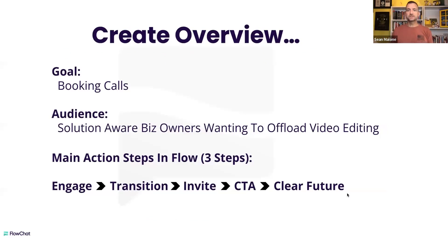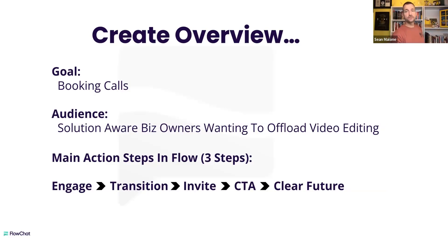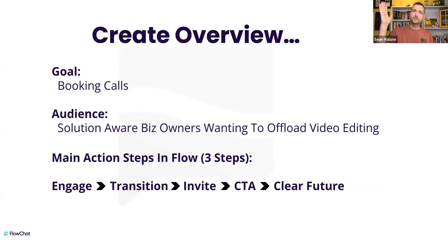The first thing we always do is create a very simple overview. What is our goal? We want to book calls. Who is our audience? Solution-aware business owners wanting to offload their video editing. Now, what is a solution-aware business owner? If you were with us last month, we went through a whole session about awareness levels of prospects — it starts with people being completely unaware, then moves into problem aware, solution aware, product aware, and then very aware type buyers. There's a different level of how you speak to each level of awareness.